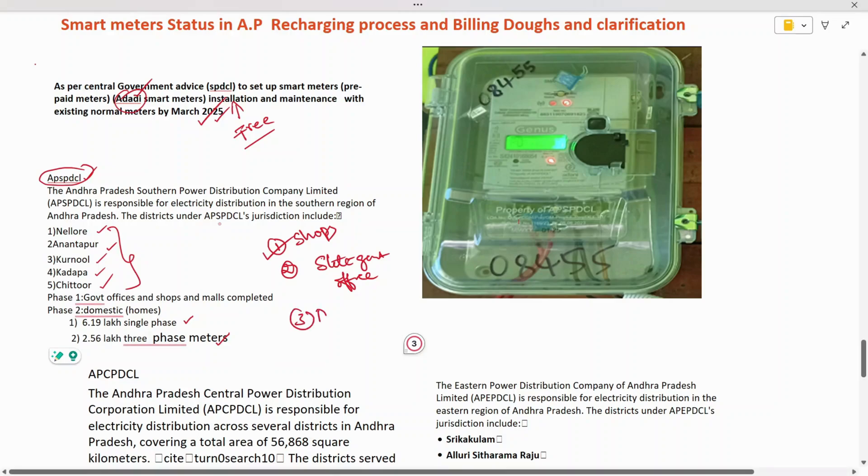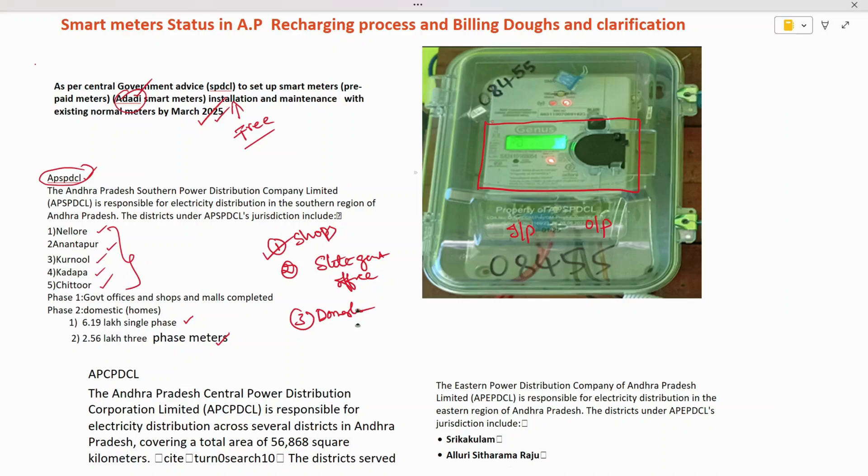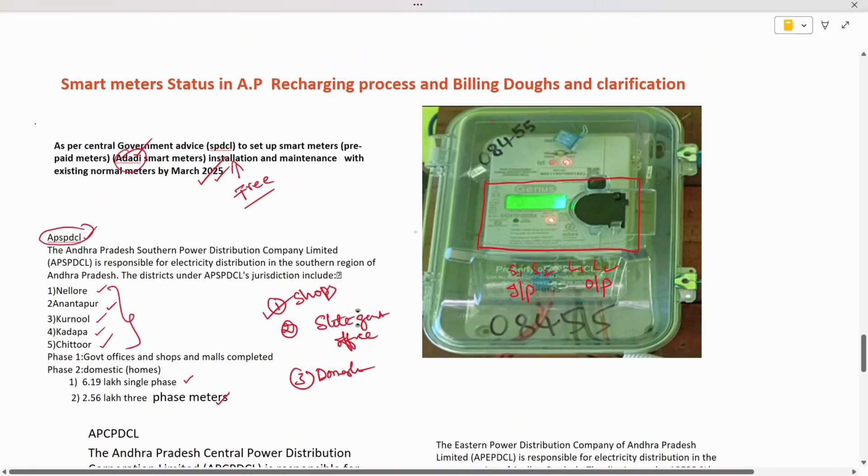The third phase focuses on installing meters in homes. This is how a smart meter looks. This is the energy meter - here you have the input and this is the load. Here you have Service 1, Service 2, Load 1, Load 2, and this connection is taken care of by the department.